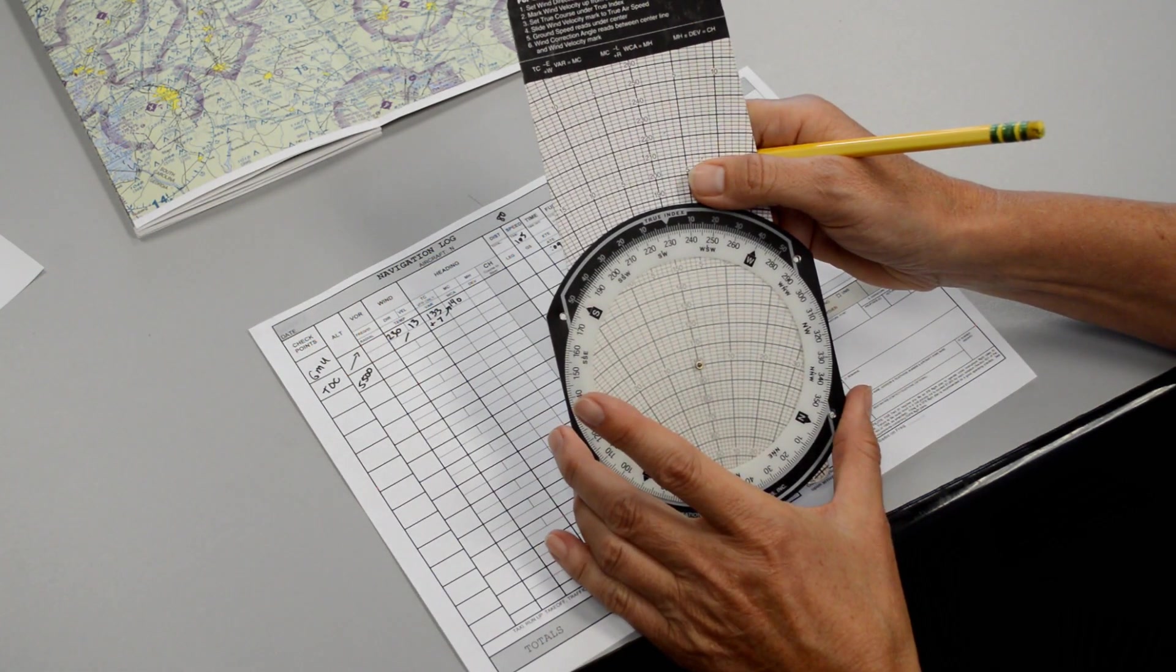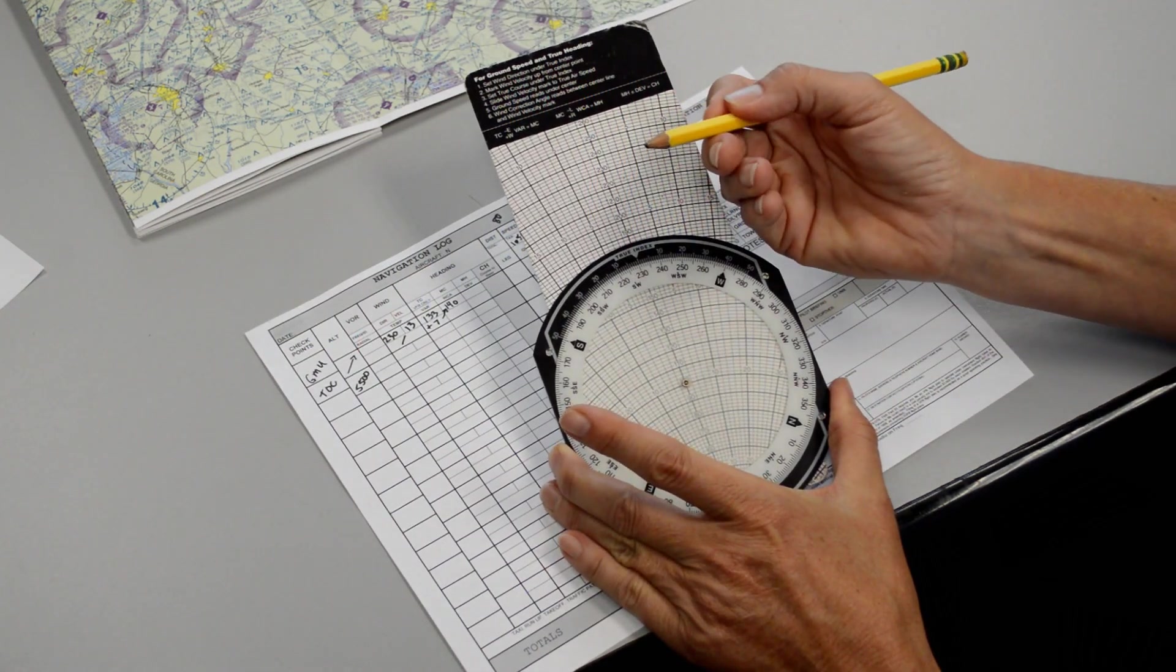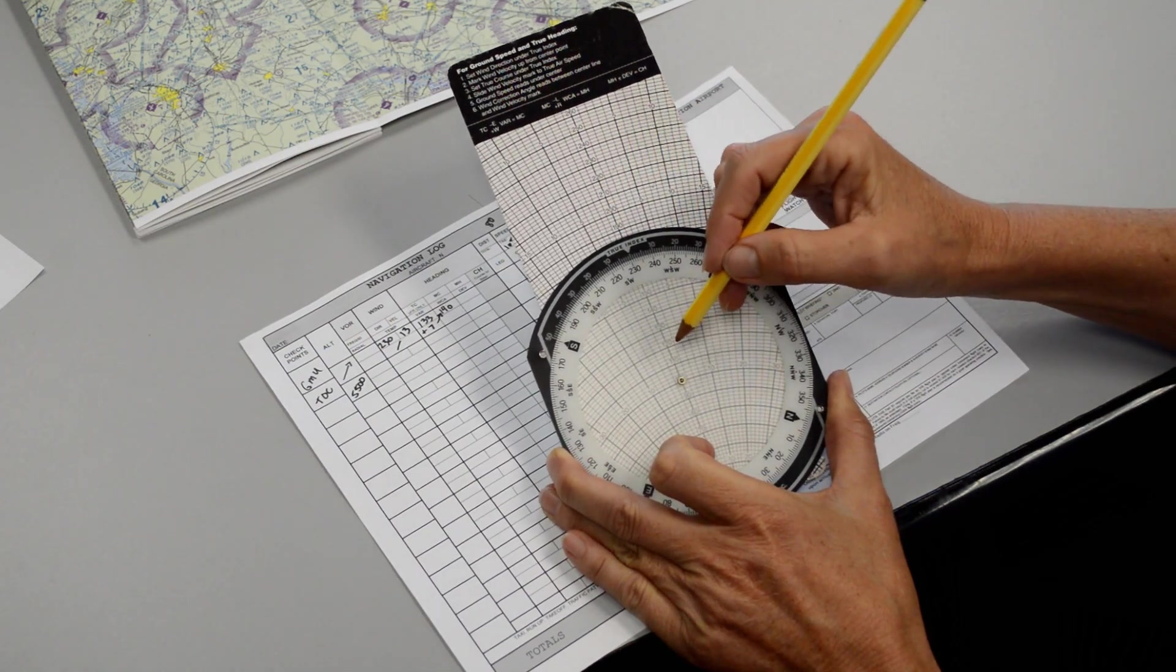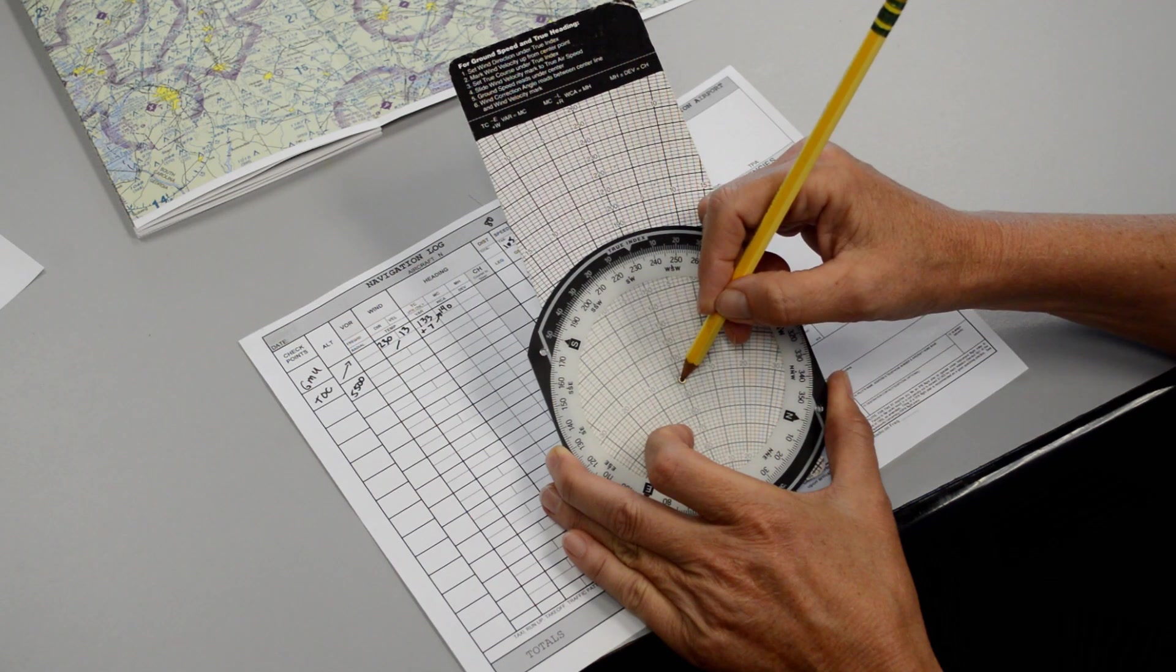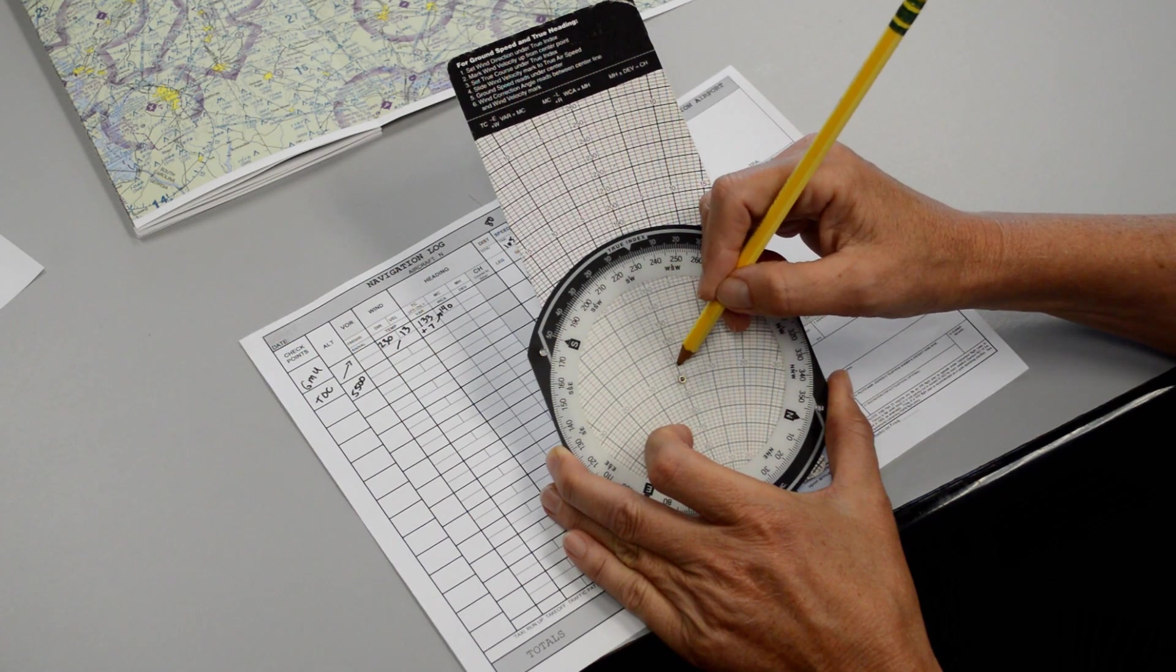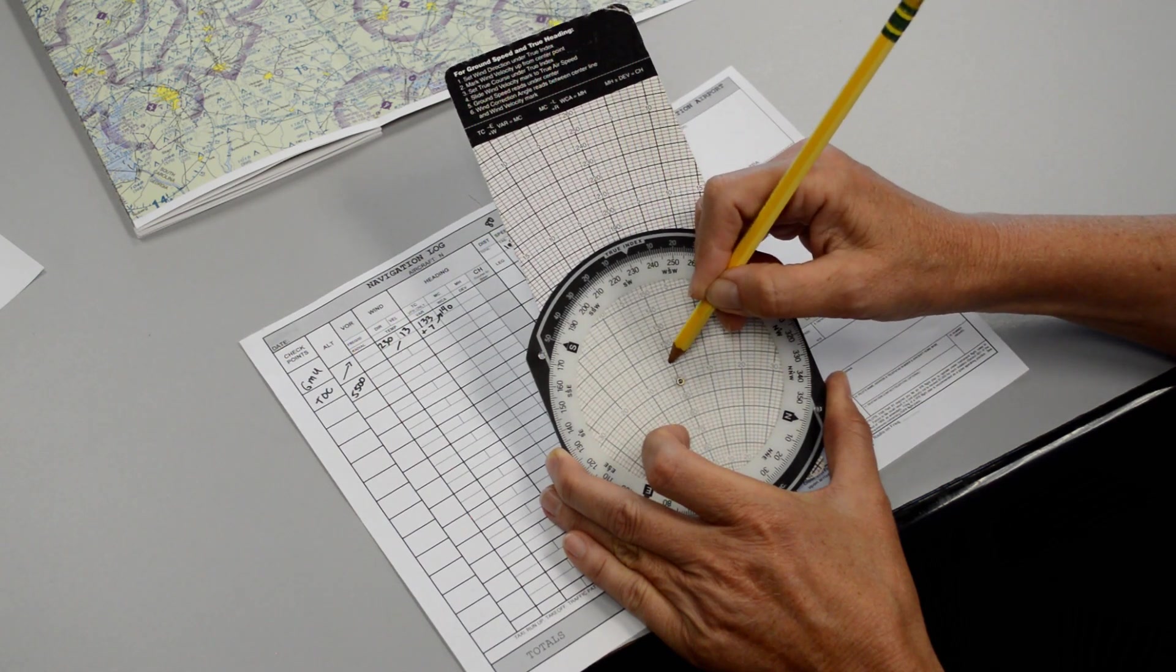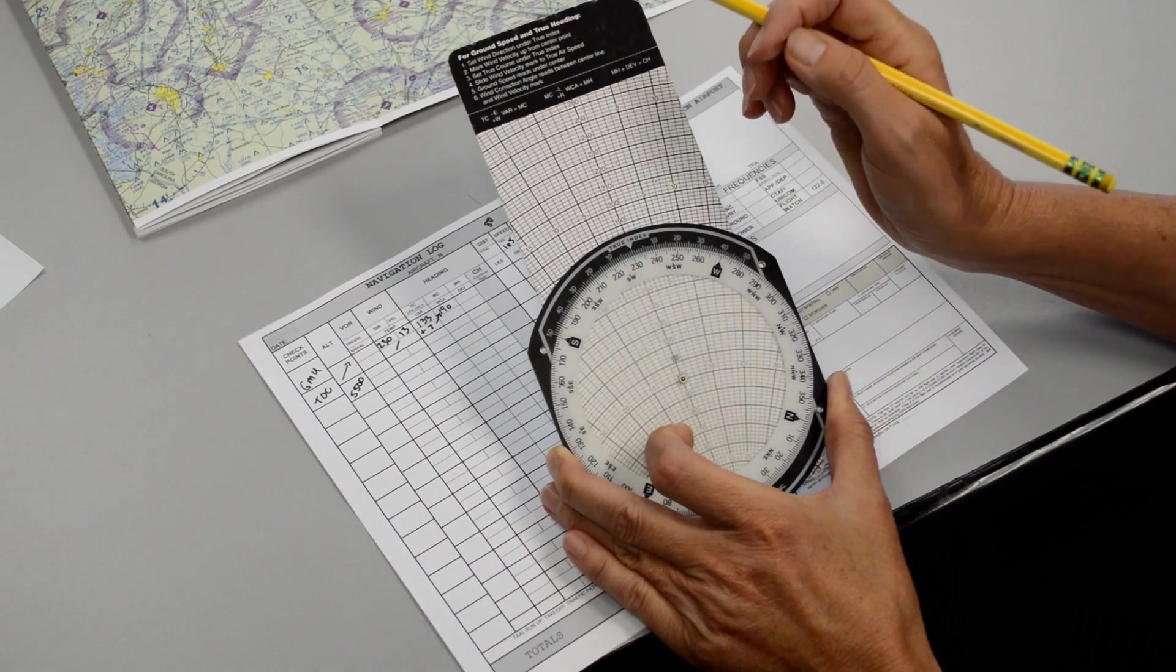And then it says mark your wind velocity up from the center point. So you need a pencil, don't write in pen, or you'll not be using your E6B very long as you're going to have too many marks on it. So from the center, we need to find 13 up. So we said this is 10, and that's 20. So 13 is going to be right about here. We just make a small mark. You can make an X or a dot, whatever you like.